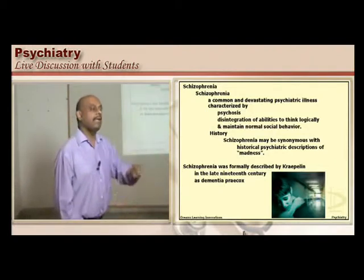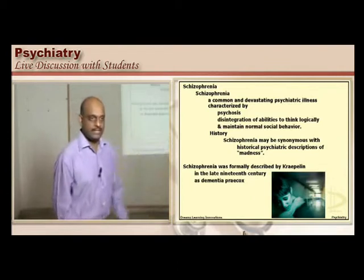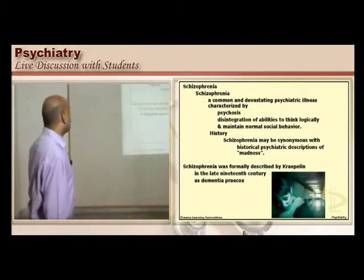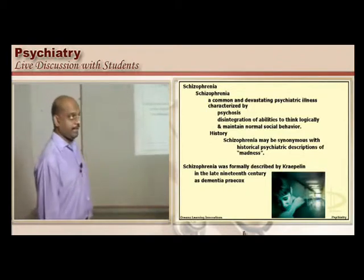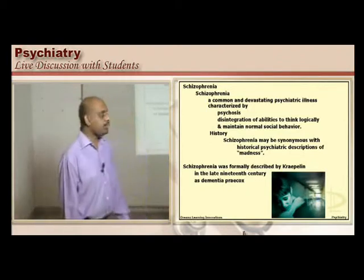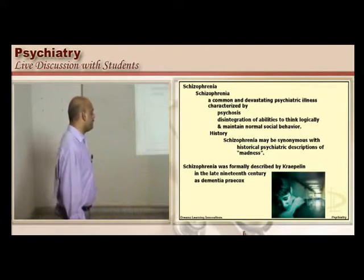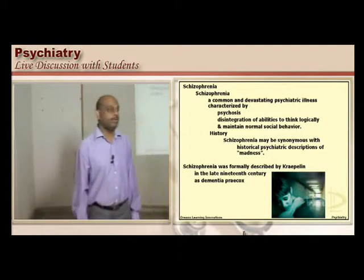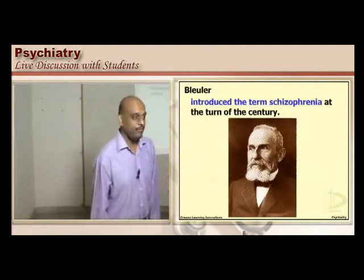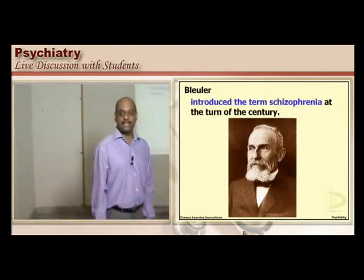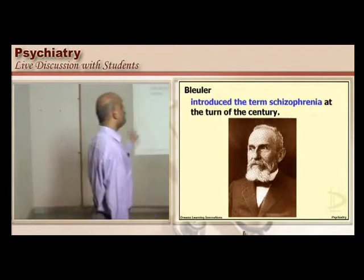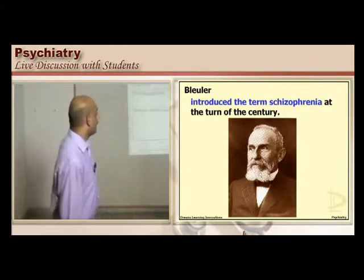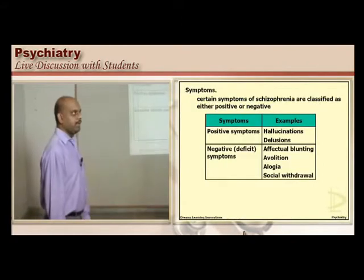It was originally Kraepelin in the late 19th century who labeled it as 'dementia praecox,' the name which was given for schizophrenia. Talking about schizophrenia without mentioning Bleuler would be a historical mistake. Bleuler was an eminent personality who introduced the term 'schizophrenia' at the turn of the century.